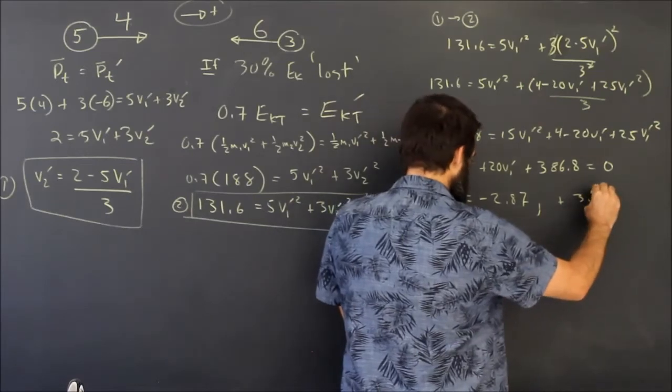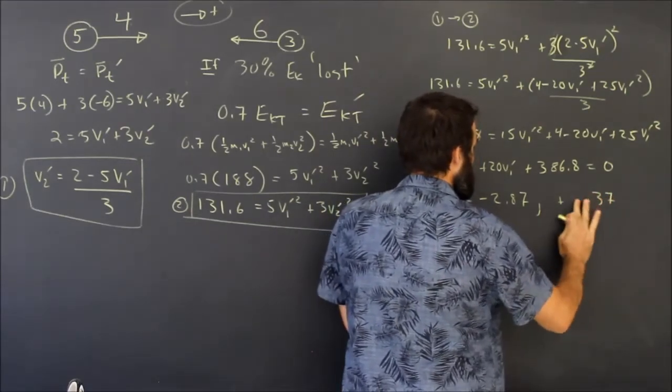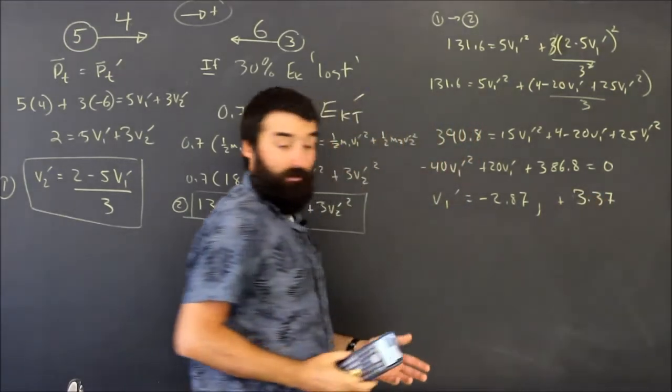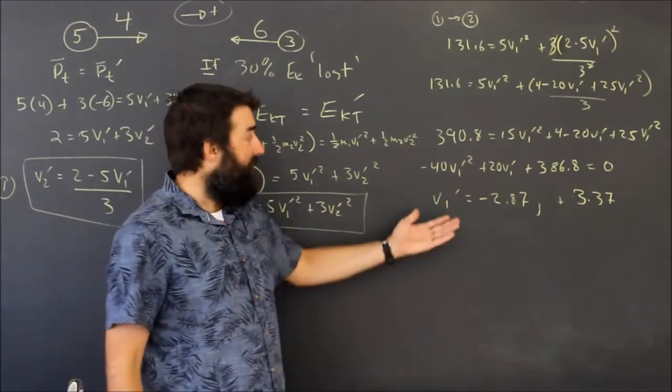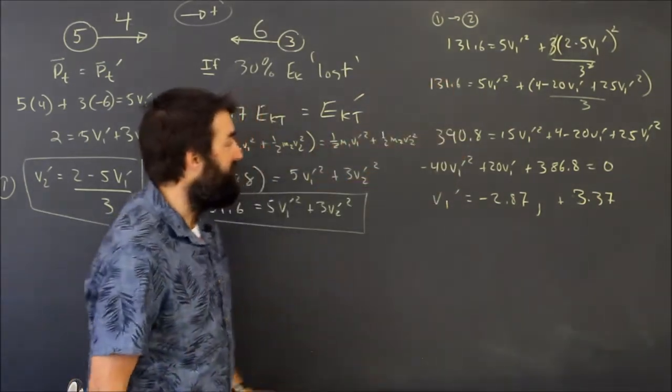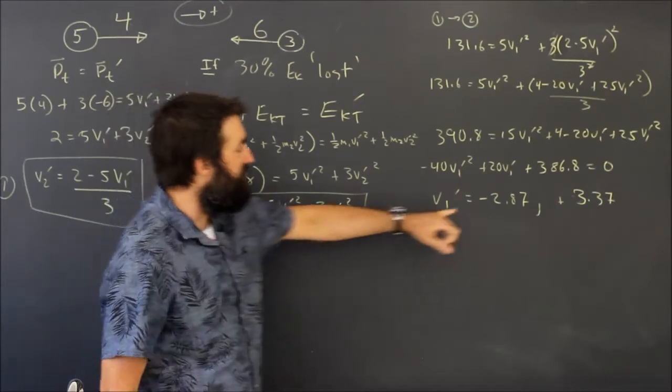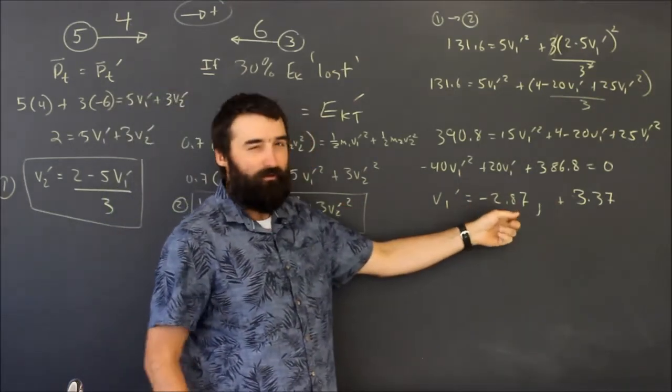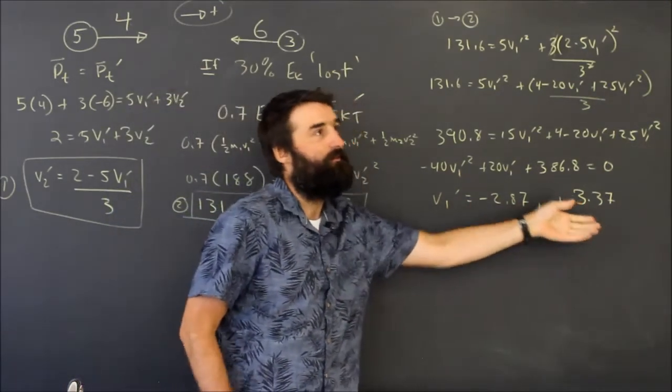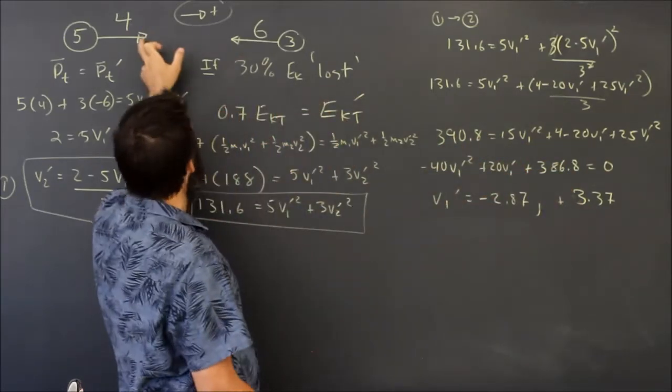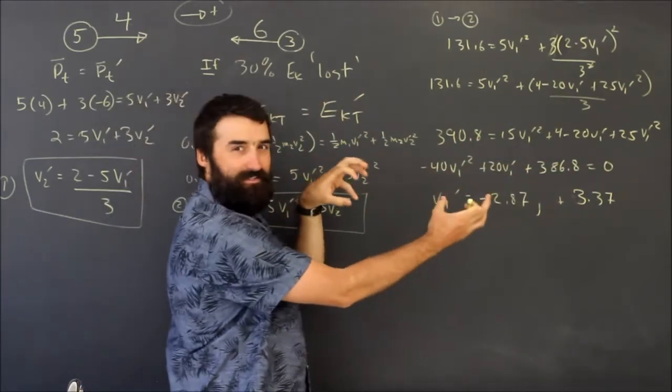And according to my calculator, the other answer is positive 3.37. So again, just like in part A, we get two answers. It's a quadratic equation, that's not surprising. One of them makes sense - this one is left but smaller than the answer to part A, which makes a lot of sense.